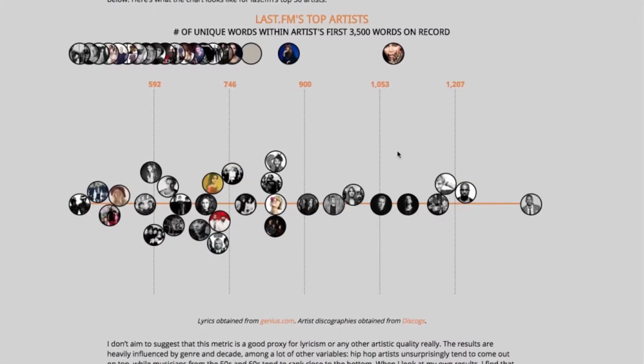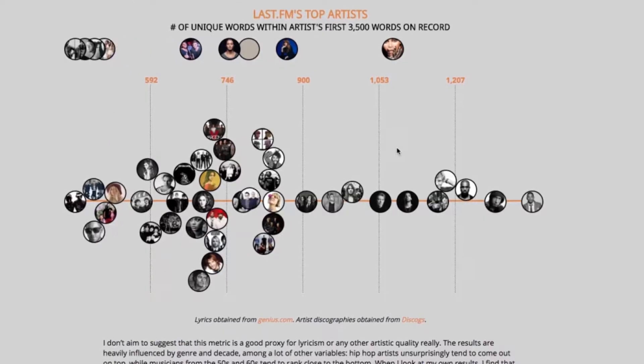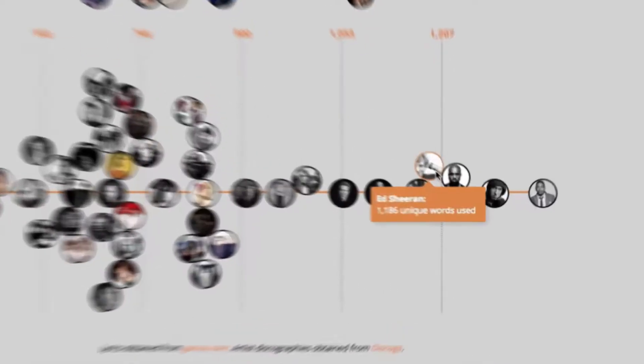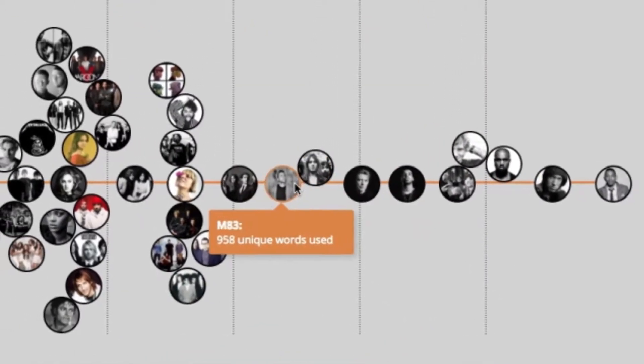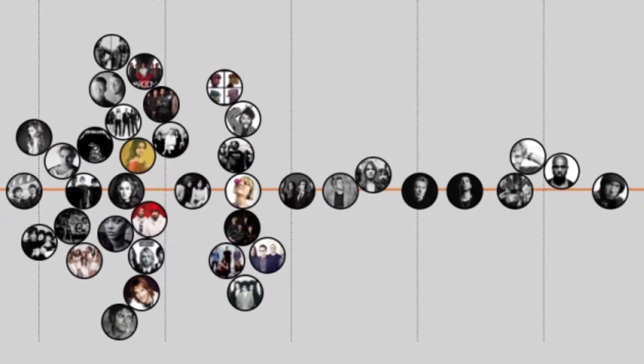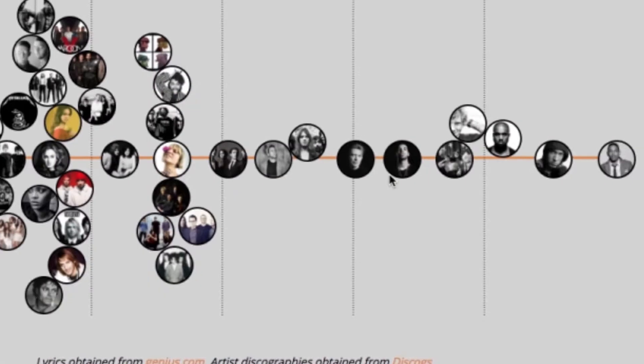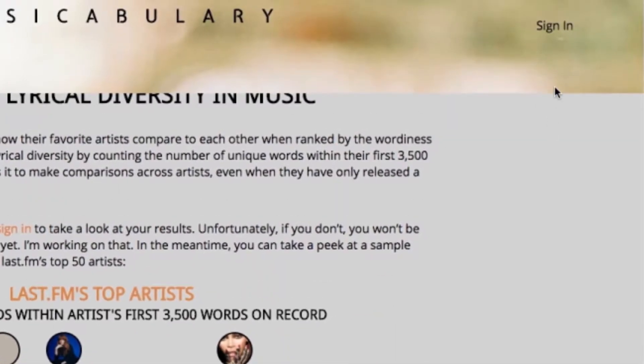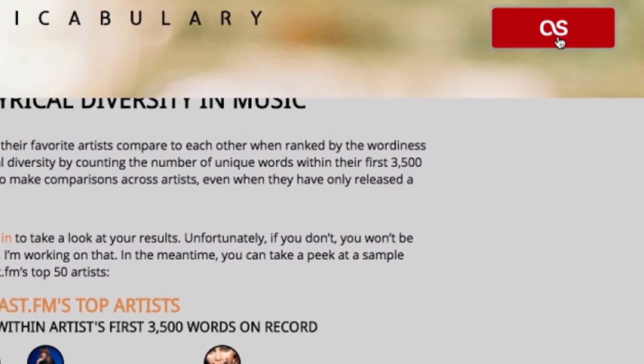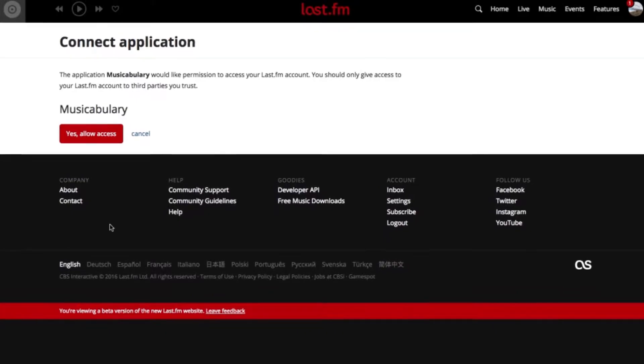If you go to the main page of my website, it will look very similar to the blog post that I mentioned. It's just going to have an icon for each one of the top 50 artists in Last.fm. You can scroll over each one of them and figure out what their score is. But what you can do that's different from the blog post is that you can log on using your Last.fm credentials and you get to see your own chart.